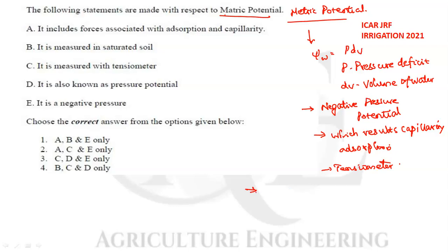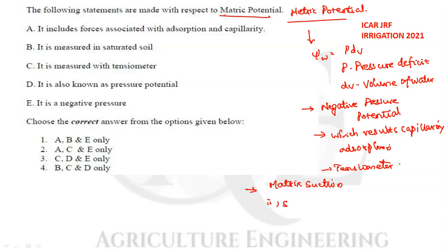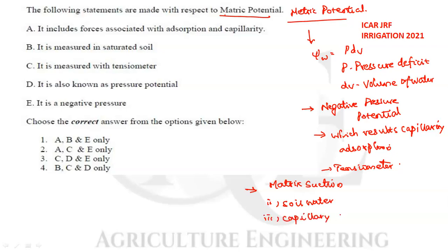Metric potential can also be called matric suction, soil water suction, or capillary potential. These are all alternate names for metric potential.